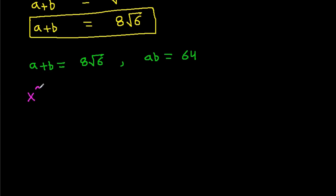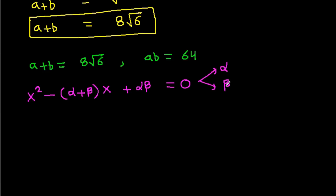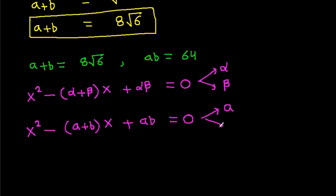For the equation x² minus (α + β)x plus αβ equals 0, the roots are α and β. So for the equation with roots a and b: x² minus (a + b)x plus ab equals 0, which gives x² minus 8√6 times x plus 64 equals 0.